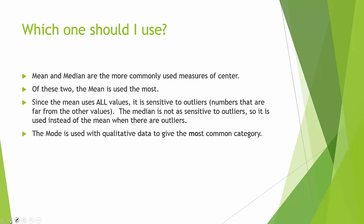We do study the others though. Mode is typically used with qualitative data, and you give the category that is most common. Midrange is the least used, and the reason we looked at midrange at all is to reinforce the idea that midrange is the same formula as midpoint — which we use when calculating the mean for summarized data and when labeling a histogram.